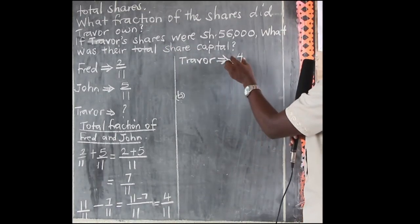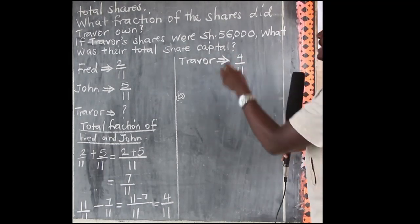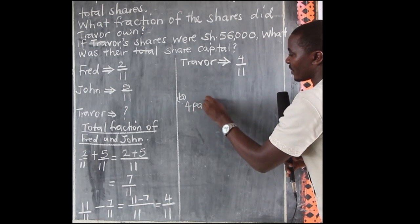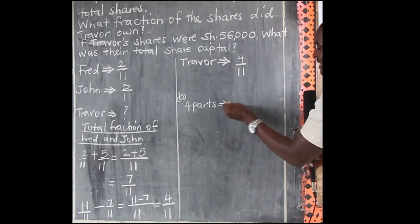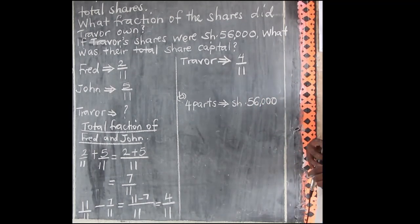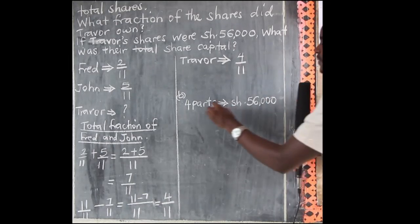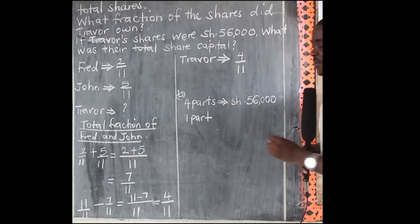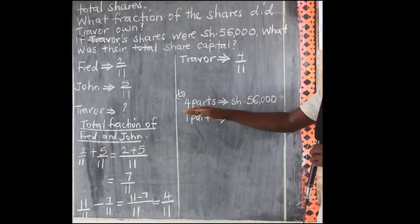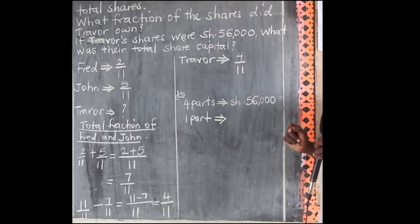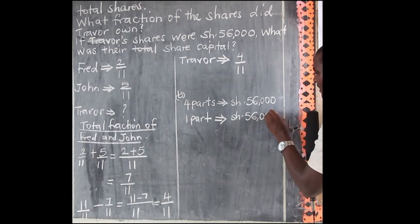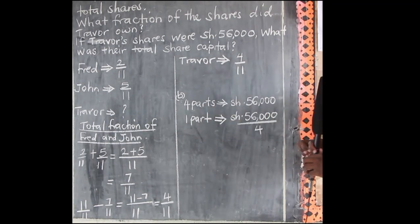These 4 parts out of 11 parts represent 56,000 shillings — Trevor's contribution. So if 4 parts represent 56,000 shillings, what about 1 part? One part represents 56,000 shillings divided by 4. Can we simply divide this? Divide 56 by 4.